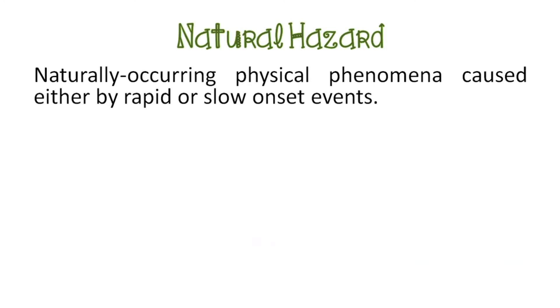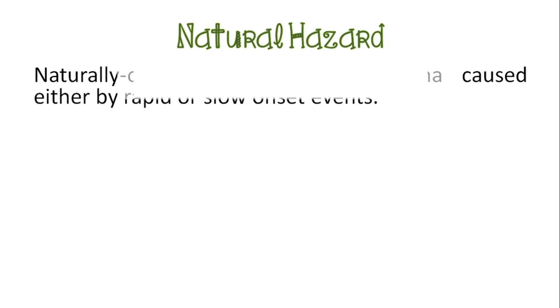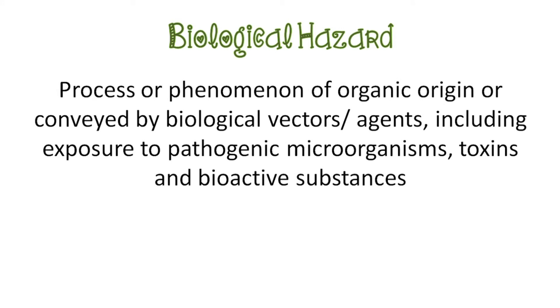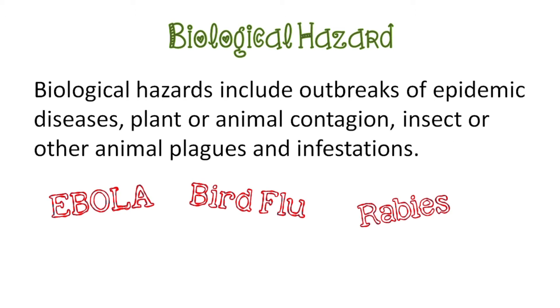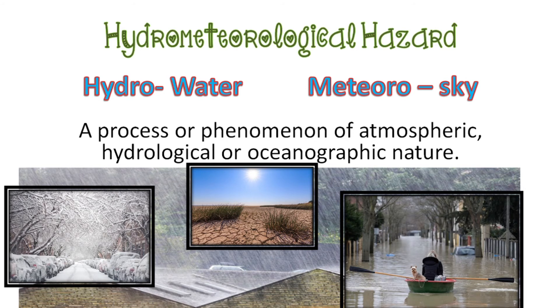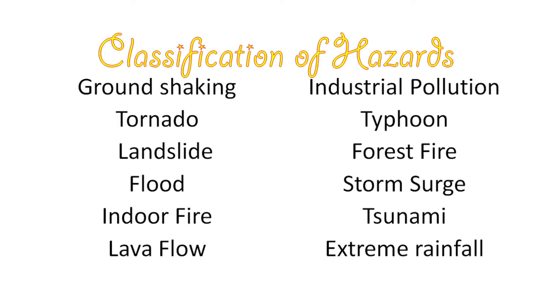Let's recap. We have two types of hazards: natural hazard and man-made hazard. Under natural hazard we have biological, geological, and hydro-meteorological. Biological deals with organic origin, agents, bioactive substances — examples are Ebola, bird flu, and rabies. Geological commonly happens on land involving internal and external earth processes. Hydro-meteorological involves water from the sky — too much or too little water. Man-made hazards are caused by humans themselves.